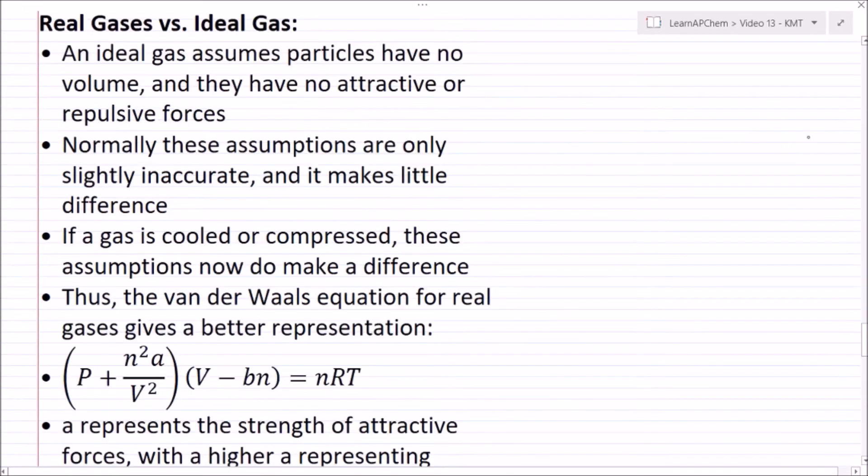Alright, so now let's talk about real gases versus ideal gases. An ideal gas assumes that particles have no volume and that they have no attractive or repulsive forces. Now this is a pretty fair assumption to make at high temperature and high volume.